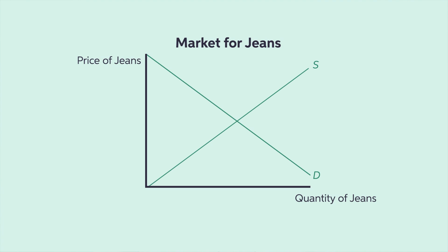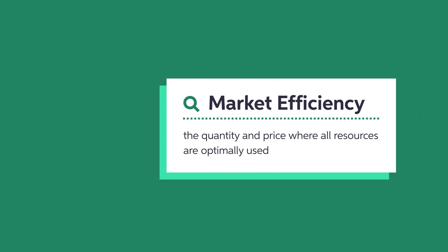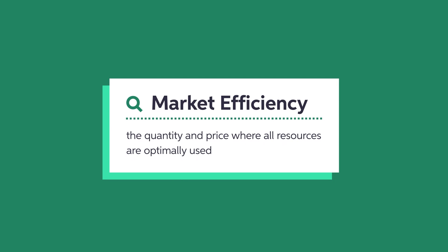Instead, the jean company will want to make the optimal amount of jeans so that all of the jeans they produce are sold for as much money as possible without any pairs going unbought. This is represented by E-Star, where the two lines cross. E-Star thus stands for market efficiency — the quantity and price where all resources are optimally used.